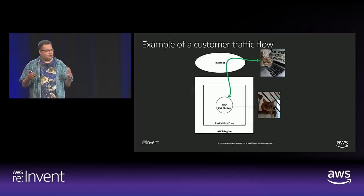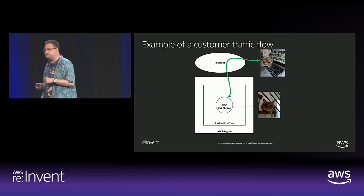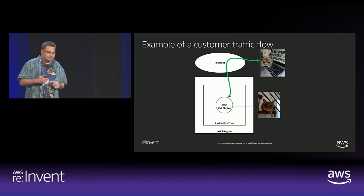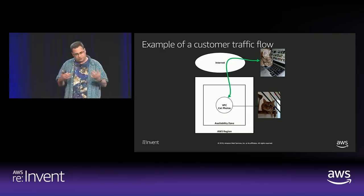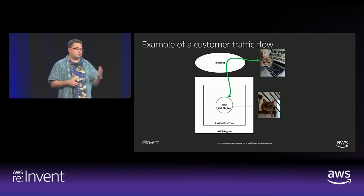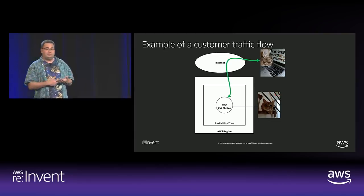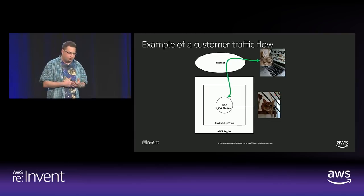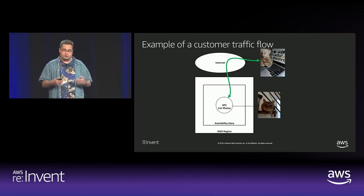Let's start with a simple example of a customer traffic flow. In this case, we have a cat that wants to go to an EC2 instance where there are other cat photos. At a high level, it looks like something on the internet that needs to talk to a region. Within that region, you have an EC2 instance that runs inside a VPC that lives inside an availability zone, which lives inside a region. There have been other talks at re:Invent about VPC, server and network cards, but we've never really talked in great detail about what goes inside the network infrastructure. This is our first attempt at going a level deeper.